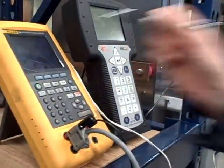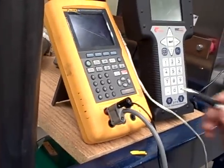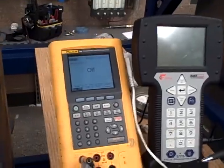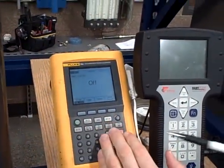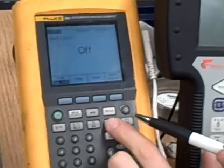Next, we set up the Fluke 744 to be a source of resistance to simulate an RTD. First we hit the Measure Source button until Source appears on the screen. Then we tell it what to source. I want to go for RTD, so I hit the TC RTD button.